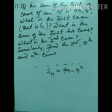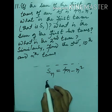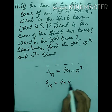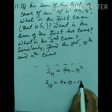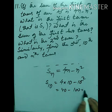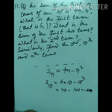That means if you want to find S₁₀, simply replace n with 10: S₁₀ = 4×10 − 10² = 40 − 100 = −60.